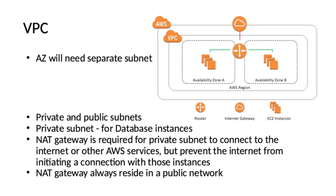VPC is a broad topic for which you need to invest serious time to understand all the concepts. As a recap for the examination, here are a few important things: each availability zone needs separate subnets — two different availability zones cannot reside in one subnet. You need to understand the concept of public and private subnets, and there will definitely be questions based on this. Remember: the database will always be in a private subnet, and a NAT gateway is required for private subnets to connect to the internet or other AWS services, but it prevents the internet from initiating a connection with instances in the private subnet.